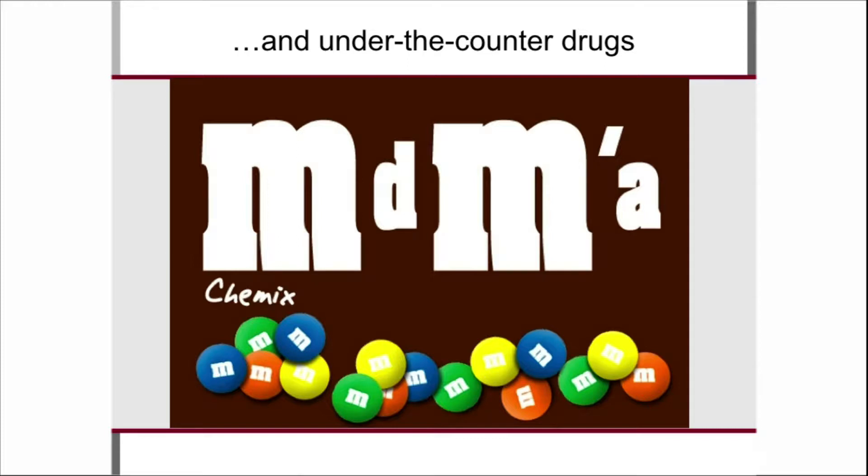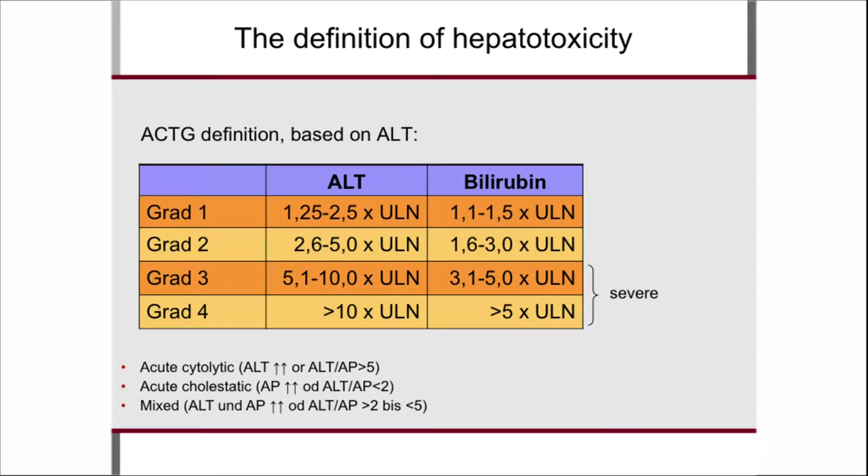There are also recreational drugs — at a Berlin rave party it's speed, ketamine, MDMA, and more. I'm not saying ecstasy is necessarily toxic to the liver, but things add up: people are on ritonavir boosters, there are drug-drug interactions, and this all comes together and may cause big problems, including in the liver.